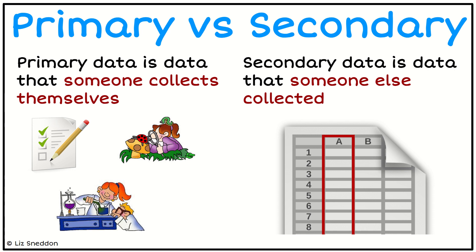Secondary data is the data that somebody else has collected. So if I get data from a spreadsheet that somebody else has made, or off the web, or anything like that, those are all secondary data. So I didn't collect the data myself — I might just be scraping the data, but I haven't collected it myself.